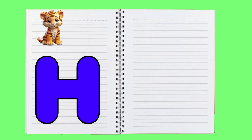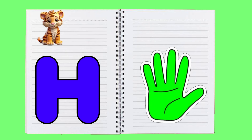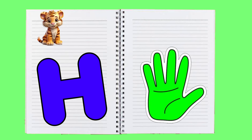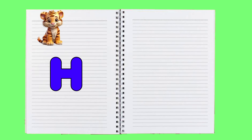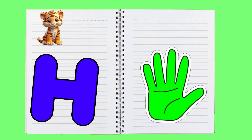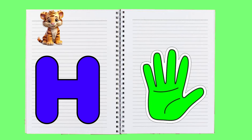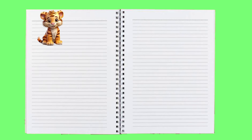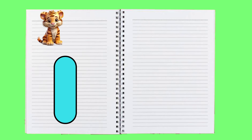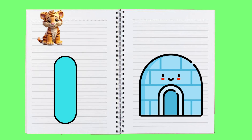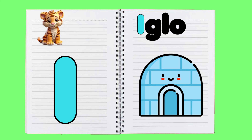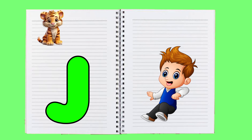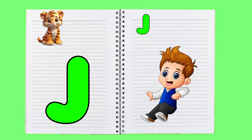H is for hand, h-h-hand. I is for igloo, i-i-igloo. J is for jump, j-j-jump.